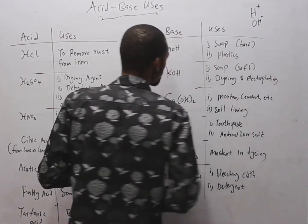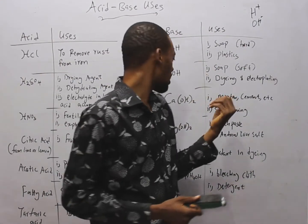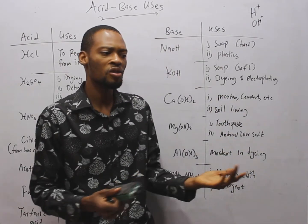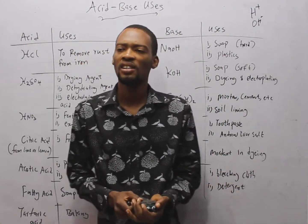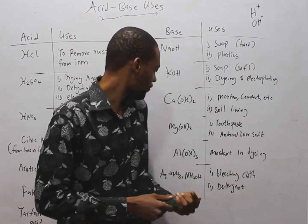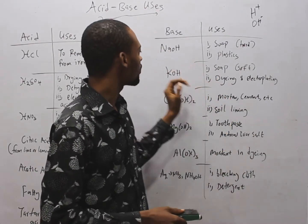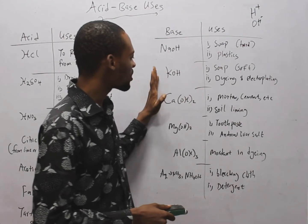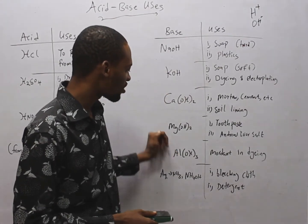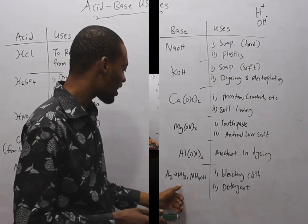For bases, sodium hydroxide is a base — most of these bases have common names like caustic soda, slaked lime, and so on. Other bases include potassium hydroxide, calcium hydroxide, magnesium hydroxide, aluminum hydroxide, ammonium oxide, and ammonia.